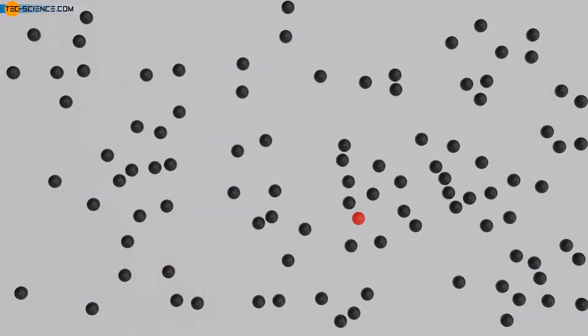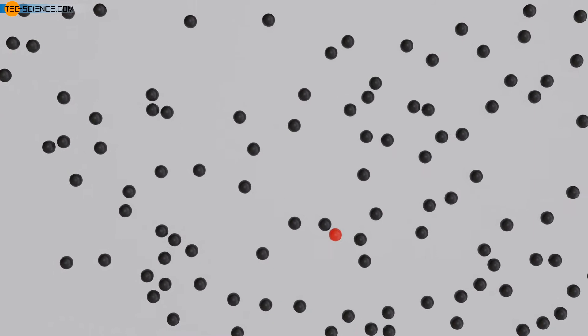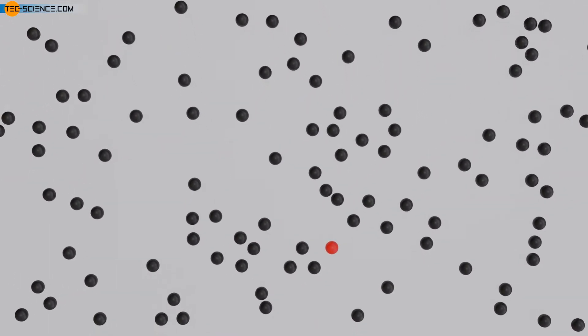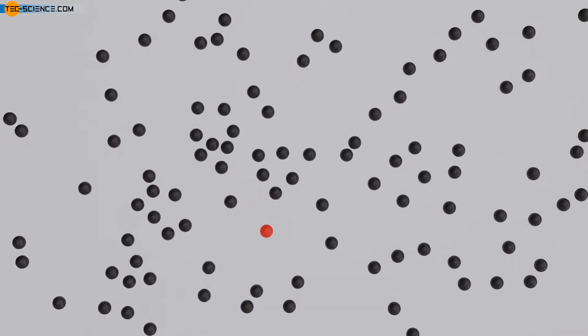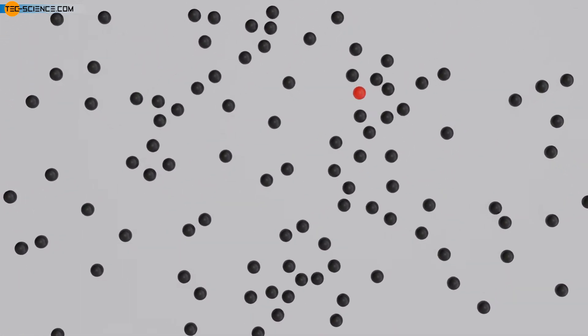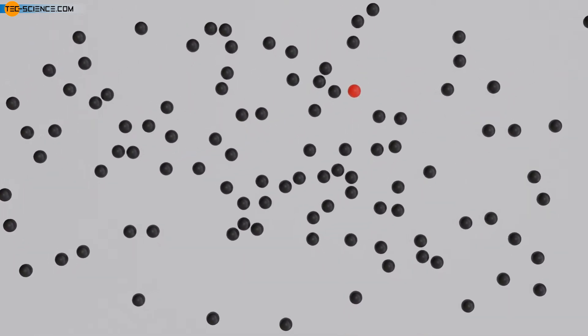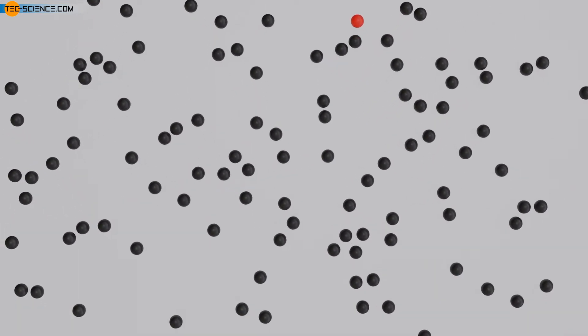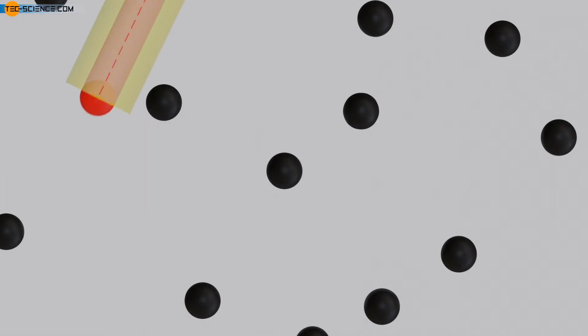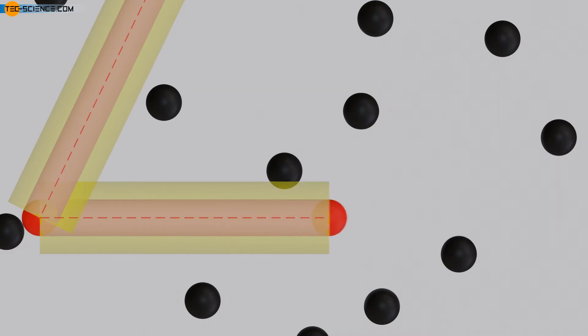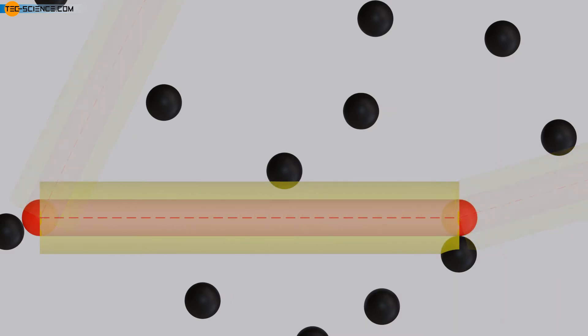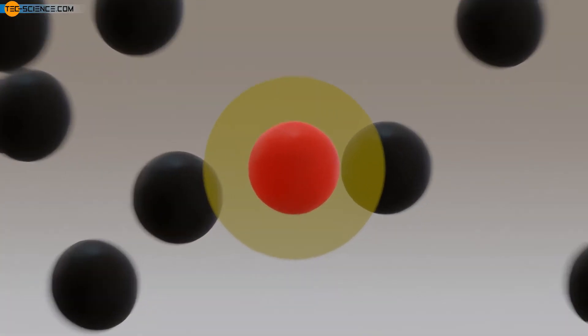In order to determine the mean free path of a molecule, a gas consisting of only one type of particle is considered. The molecules are assumed to be spheres with a diameter d. If one now follows a molecule, it will collide with other molecules at irregular intervals. The average distance traveled between two successive collisions corresponds to the mean free path λ. For the sake of simplicity, we first consider all other particles to be at rest. The molecule which we consider moves through an ocean of resting particles and changes its direction after every free path.